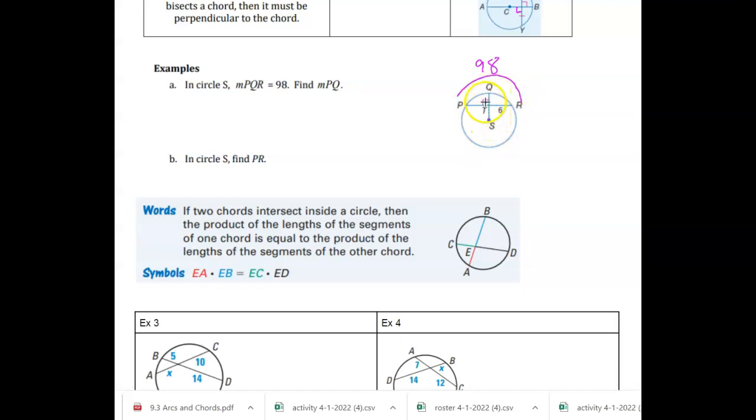So what I notice is SQ is a radius. So that's why it doesn't have to be a diameter. But that's a radius. And they show you that that's a right angle. So I've got a chord, P, R, and a radius. And they tell you that they're perpendicular to each other.